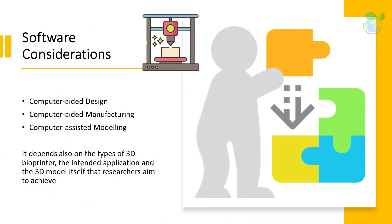Software for 3D bioprinting is required for three main steps: computer-aided design (CAD), which involves generating a 3D model to define the blueprint for the bioprinting process; computer-aided manufacturing (CAM), which involves pathway generation and bioprinting process control; and computer-assisted modeling, which involves using simulation tools to understand the fundamental behavior of the bioink before, during, and after the bioprinting process.